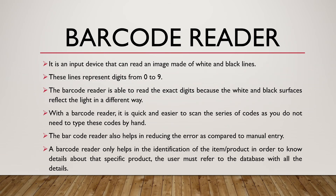The barcode reader is an input device that can read an image made of white and black lines. These lines represent digits from 0 to 9. The barcode reader reads the exact digits because the white and black surfaces reflect light differently. With the barcode reader, it is quick and easy to scan a series of codes without needing to type them by hand, which also helps in reducing errors compared to manual entry. A barcode reader also helps in identifying item products, and the database must be updated with all relevant details.